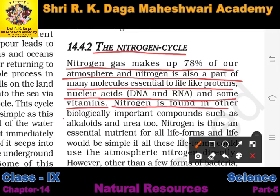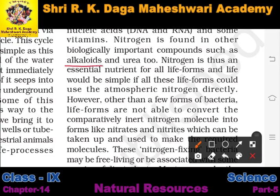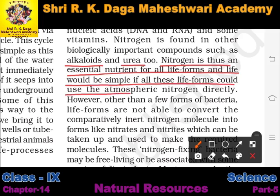Nitrogen is found in other biologically important compounds such as alkaloids and urea. It is an essential nutrient for all life forms. Life would be simple if all these life forms could use atmospheric nitrogen directly. In short, nitrogen is important for all living organisms, and their life would be easier if they could get nitrogen directly.